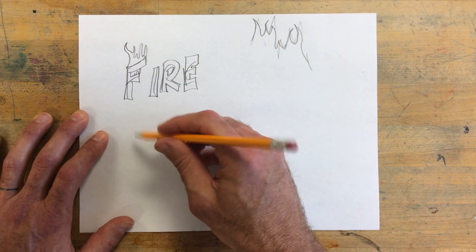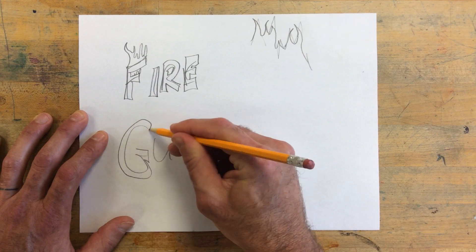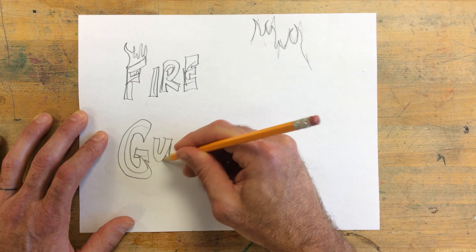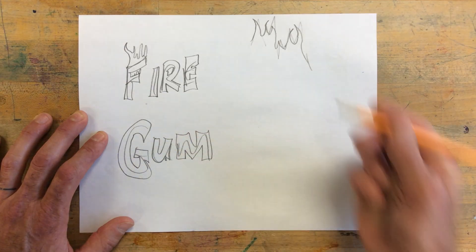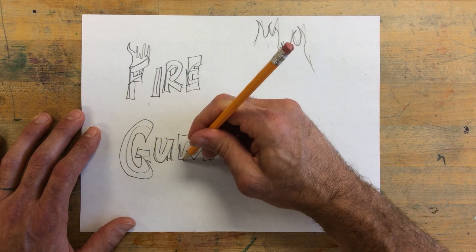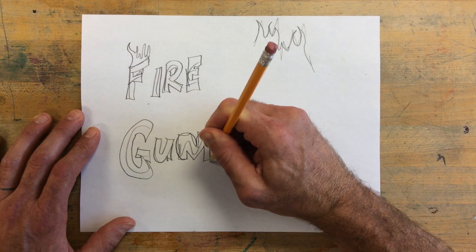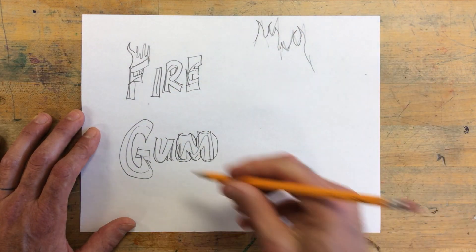You can also have the word gum. You do your block letters, get it started. And gum is really bubbly, so you might want to make a circle around each one to make them into bubble letters.